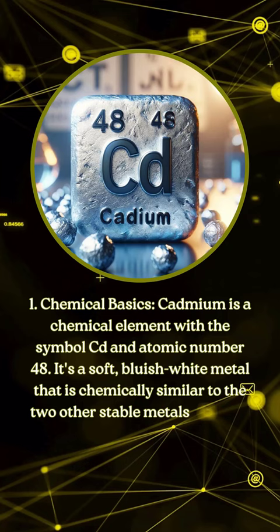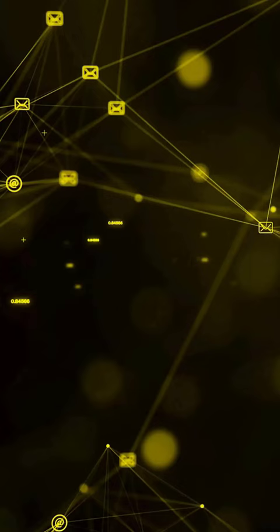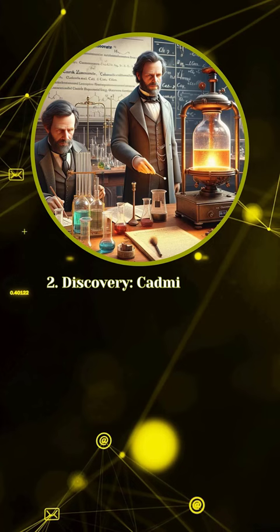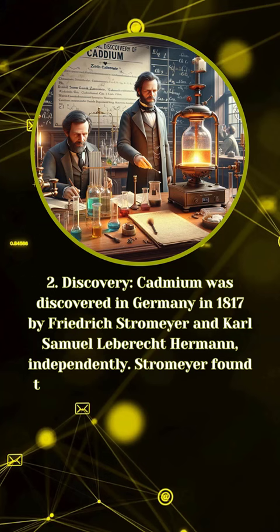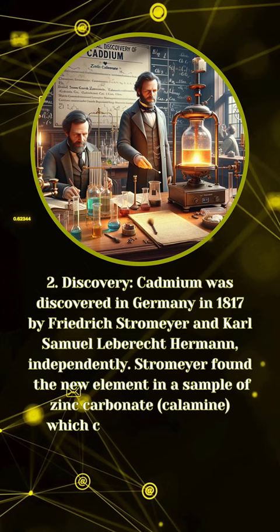Discovery: Cadmium was discovered in Germany in 1817 by Friedrich Stromeyer and Carl Samuel Lebrecht Hermann independently. Stromeyer found the new element in a sample of zinc carbonate — calamine — which changed color upon heating because of the presence of cadmium impurities.